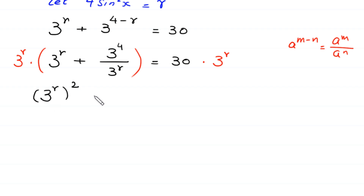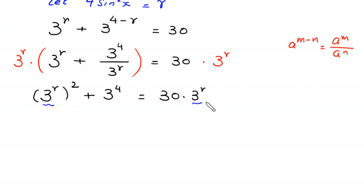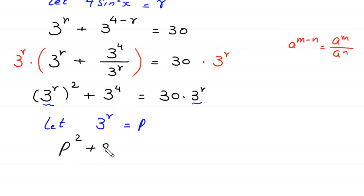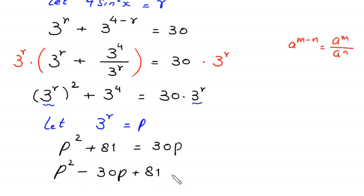We have (3^r)² + 3⁴ = 30·3^r. Since 3⁴ = 81, we let p = 3^r. The equation becomes p² + 81 = 30p. Moving 30p to the left side gives p² - 30p + 81 = 0.